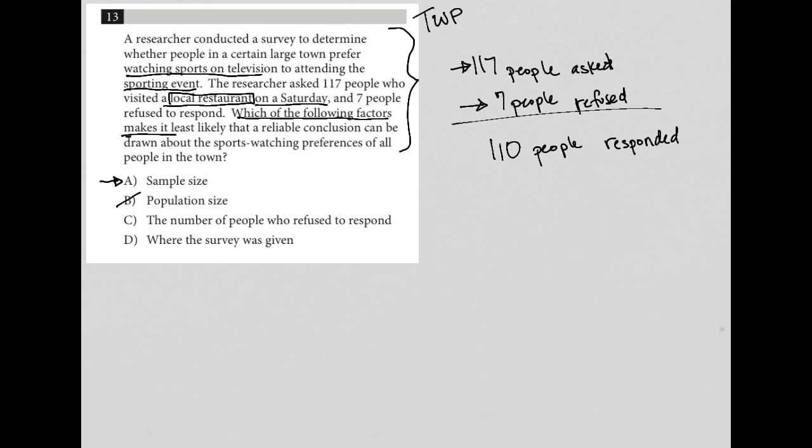So choice C, the number of people who refuse to respond. So seven people refuse to respond. You know, truly, seven refusing out of 117 asked, that's pretty good. That's not the majority of people. That's a minority of people who were asked who refuse to respond. So I don't think that that would make it less reliable.